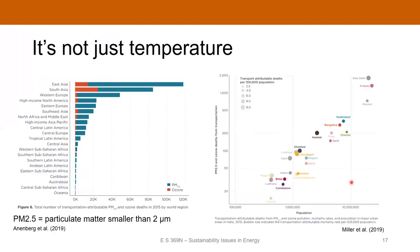It's not just CO2 emissions and temperature we have to worry about from burning fossil fuels — there's also particulate matter and other chemicals produced as a result. Here's an interesting study by Annenberg et al. looking at transportation-attributable PM2.5 and ozone deaths. PM2.5 is particulate matter smaller than two microns — soot, ash, that sort of thing that comes from combustion. Especially in East Asia and South Asia, there is a tremendous amount of deaths attributable to these chemicals, particularly particulate matter caused by burning fossil fuels or biomass. This is a big problem.